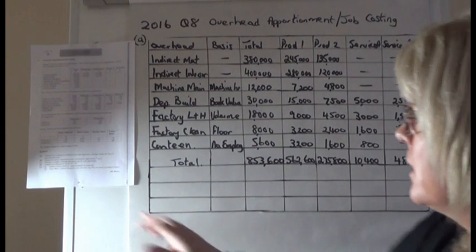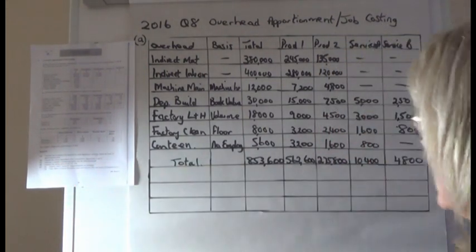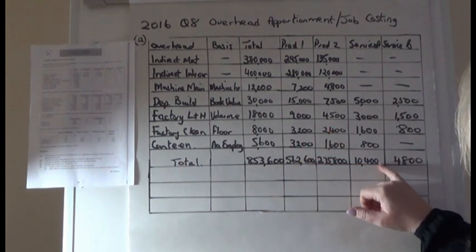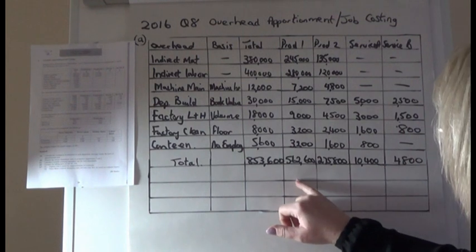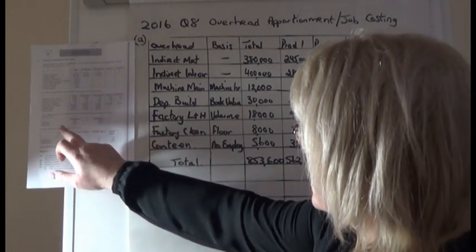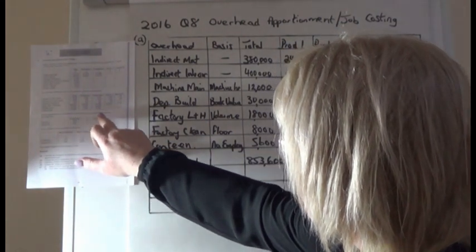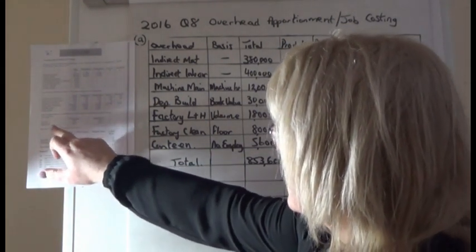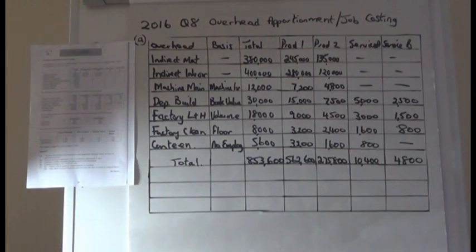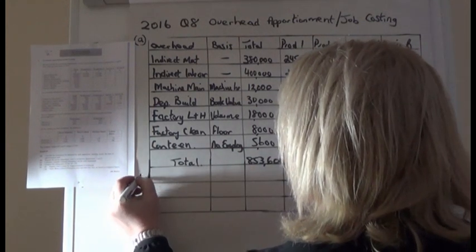Moving on to Part B, which asks us to transfer the service department costs to Production Departments 1 and 2. We take the totals from Part A for Service A and B and transfer them back to Productions 1 and 2. The question gives us the ratios: Service A is 70% to Production 1 and 30% to Production 2.